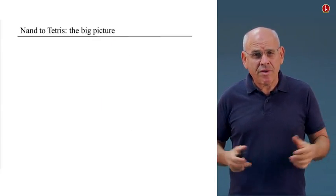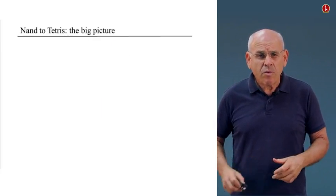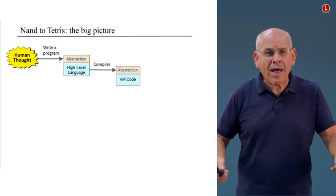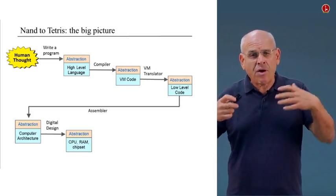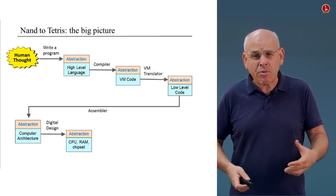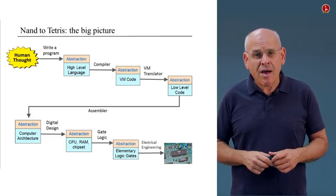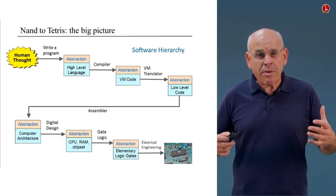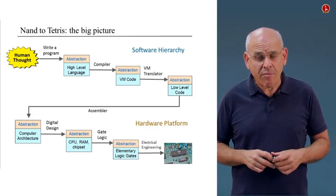Here is the general picture of this course. We start with some general idea of a program that we want to write. We write the program, compile it, translate it further into machine language, load the code into our computer. The computer uses all sorts of chips that we built, based on elementary logic gates. Basically what we did is we built a software hierarchy that sits on top of some hardware platform.